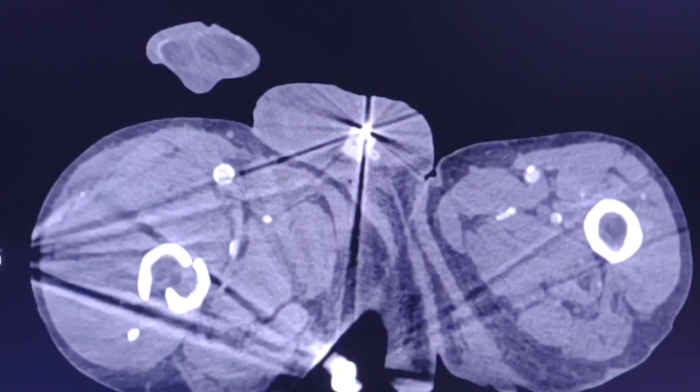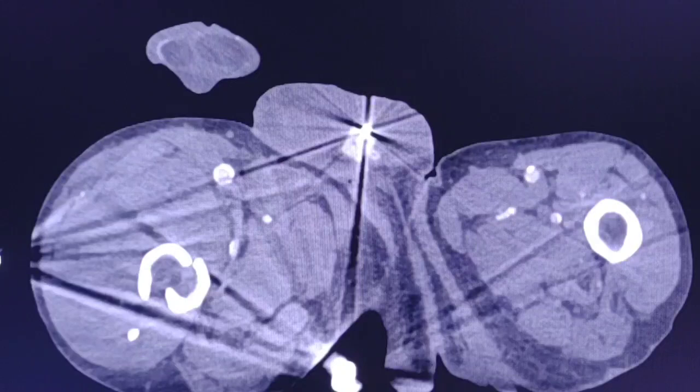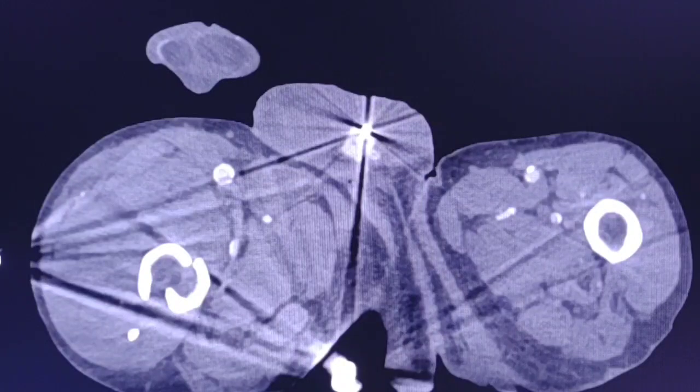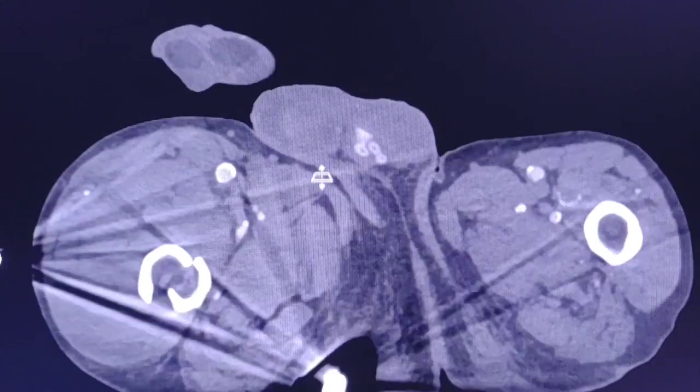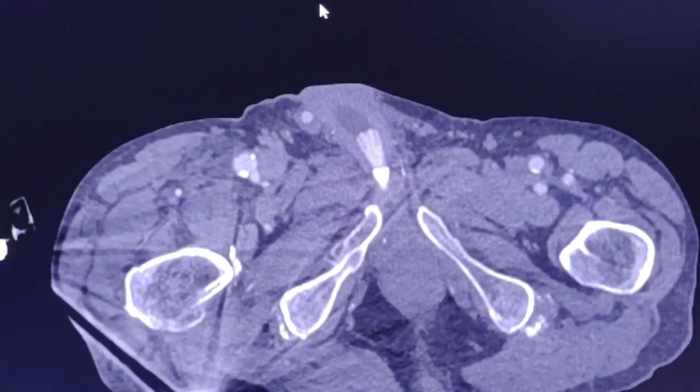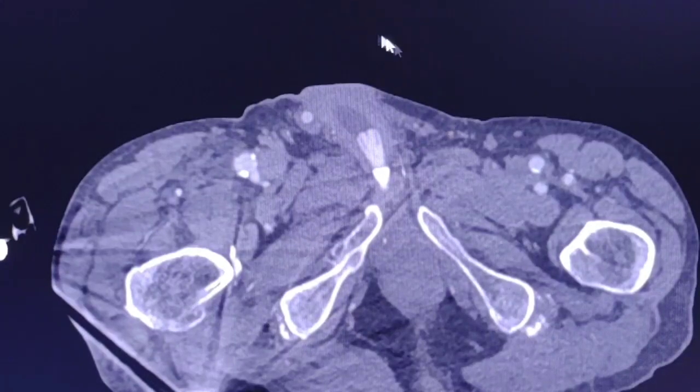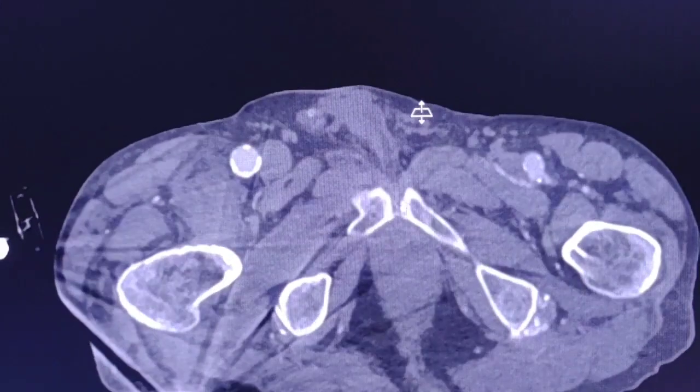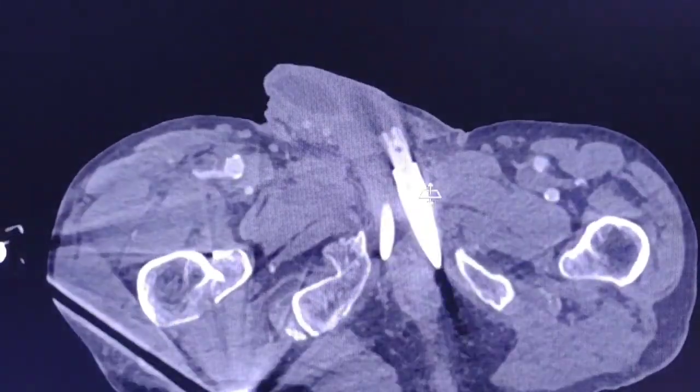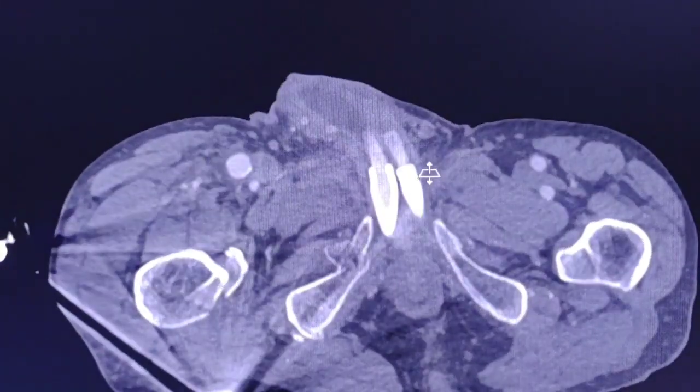And the most common are leaks around the tubes or the reservoir with subsequent infection. We can see some free fluid in the lower pelvis, for example, or some inflammatory process very close to one or more of the components of the device.